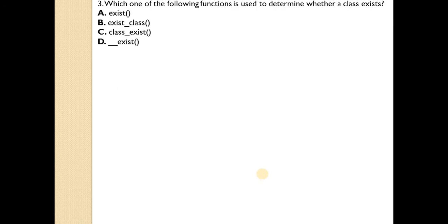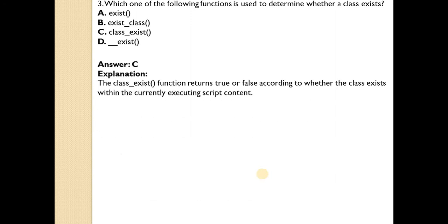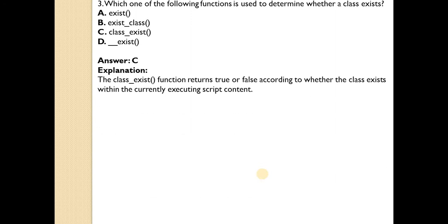Which one of the following programming functions is used to determine whether a class exists? Answer is C. The class_exists() function returns true or false depending on whether the class exists.